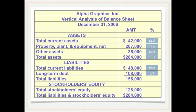Total liabilities were $156,000. This will not be 100 percent because we are not dividing total liabilities by total liabilities — we're dividing by total liabilities and stockholders' equity of 284,000. So total liabilities will be 54.9 percent. Total stockholders' equity of 128,000 divided by 284,000 will be 45.1 percent of total liabilities and stockholders' equity.